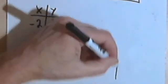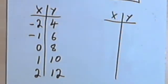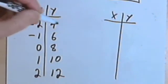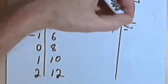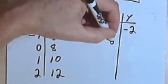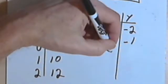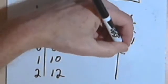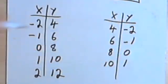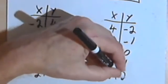Now I can make the inverse of this function by just swapping the inputs and the outputs, swapping the x's and the y's. So instead of having the pair negative 2 comma 4, I'll have 4 comma negative 2. Instead of negative 1 comma 6, I'll have 6 comma negative 1. 0 comma 8 will be 8 comma 0. Instead of 1 and 10, I'll have 10 and then 1 as my output. And instead of 2 and 12, I'll have 12 as the input and 2 as the output.